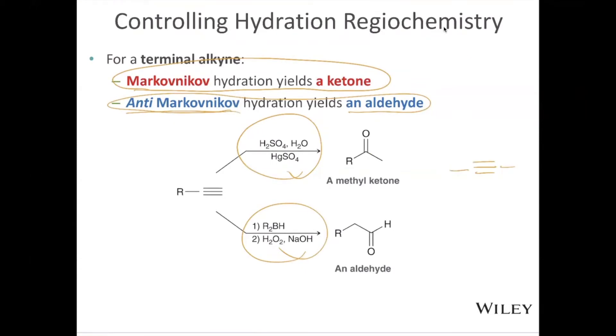If we have an alkyne that is not terminal, in other words, it's internal, so we have four carbons in a row, there's really no difference between either of these two carbons in terms of substituents. And so our OH can add to either one in both of these reactions. And so both the mercury catalyzed Markovnikov reaction and the boron reagent non-Markovnikov reaction will yield a mixture of products in which the OH goes here and here, and there's really no preference one way or the other. So it's always going to be a mixture of products with both of these reactions.